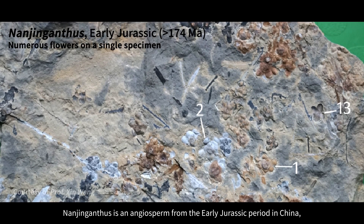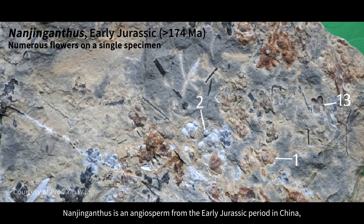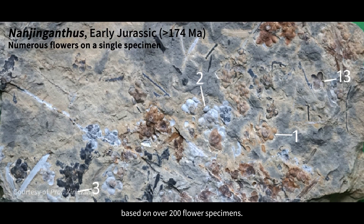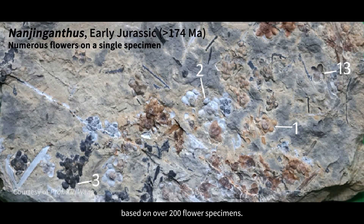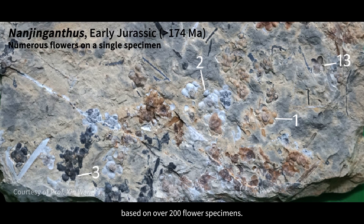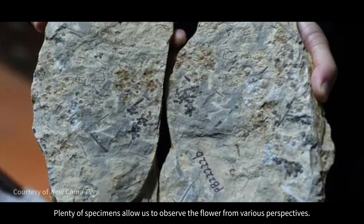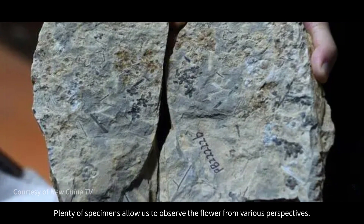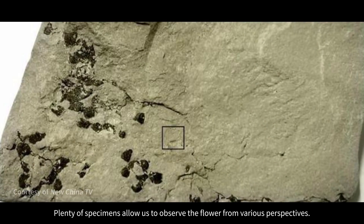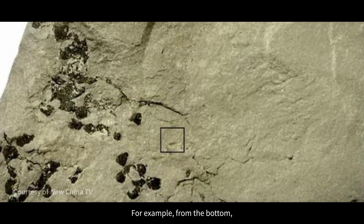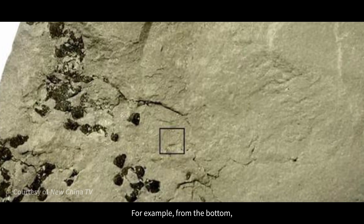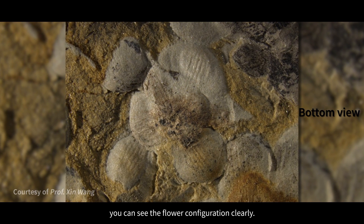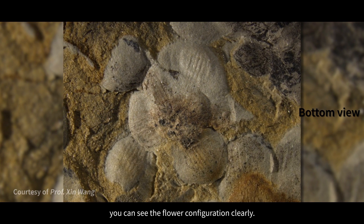Nanjinganthus is an angiosperm from the early Jurassic period in China, based on over 200 flower specimens. Plenty of specimens allow us to observe the flower from various perspectives. For example, from the bottom, you can see the flower configuration clearly.